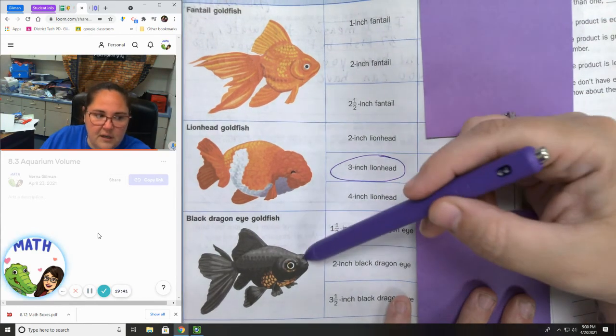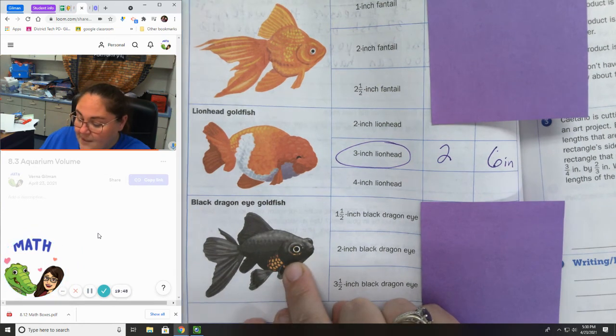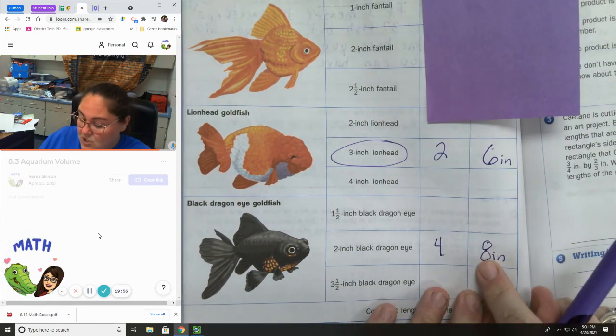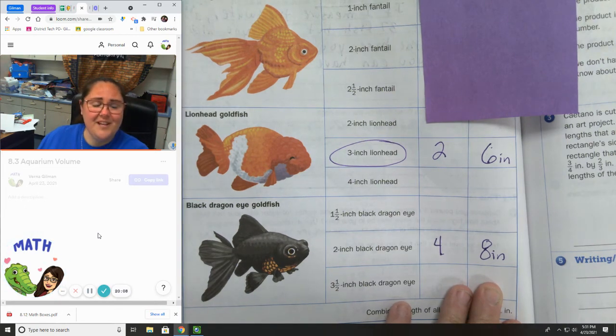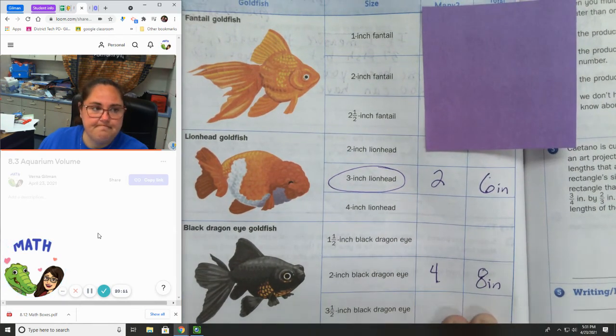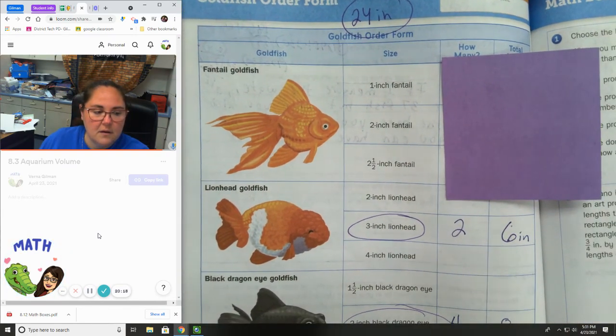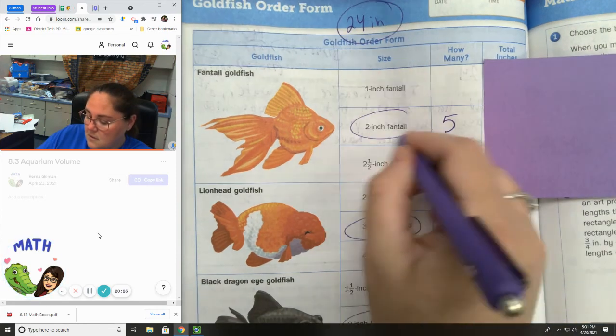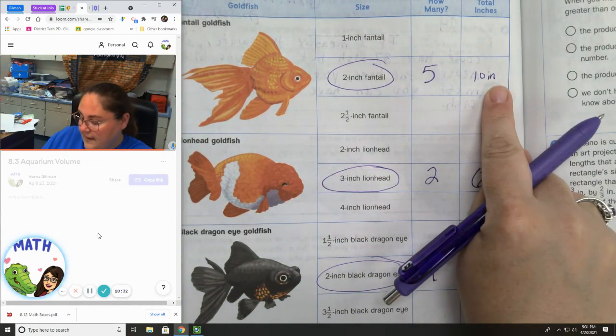So two lion heads would take up six inches of space. 24, that means I have 18 total left. These black dragon eyes are really cool. I kind of like how they look. I like that it has the gold on the bottom. I'm going to get four of them because I think they look neat. So two inches each times four fish. That would take up eight inches. So eight, nine, 10, 11, 12, 13. I have 10 inches left.